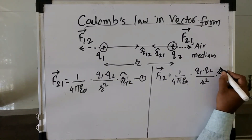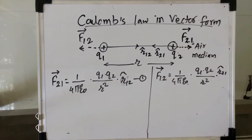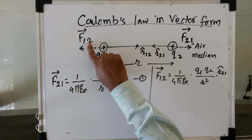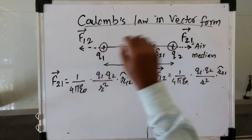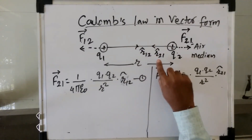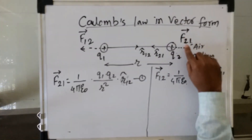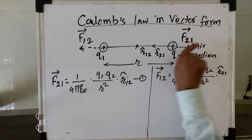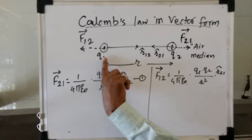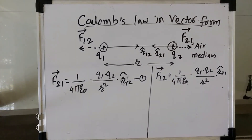Most students get confused about how to set the direction of the unit vector. It is very simple — force acting on first due to second means the unit vector must be directed from second to first. Similarly, force acting on second due to first means the unit vector must be directed from first to second. So now we have two equations.